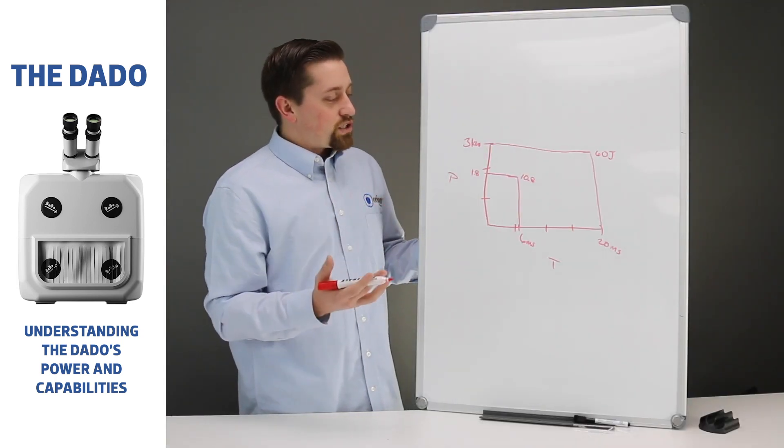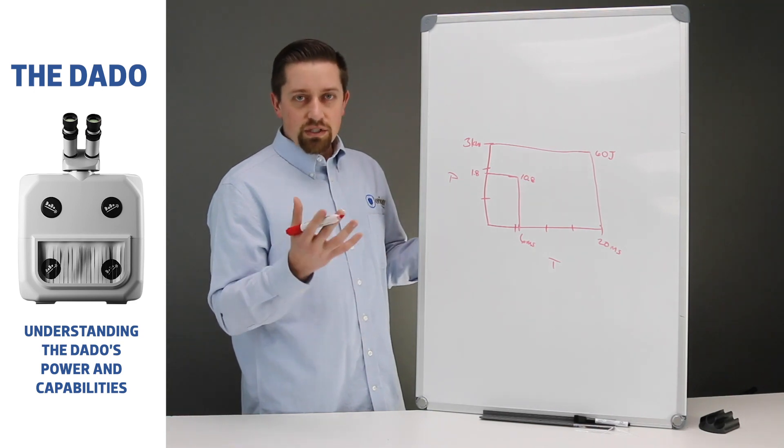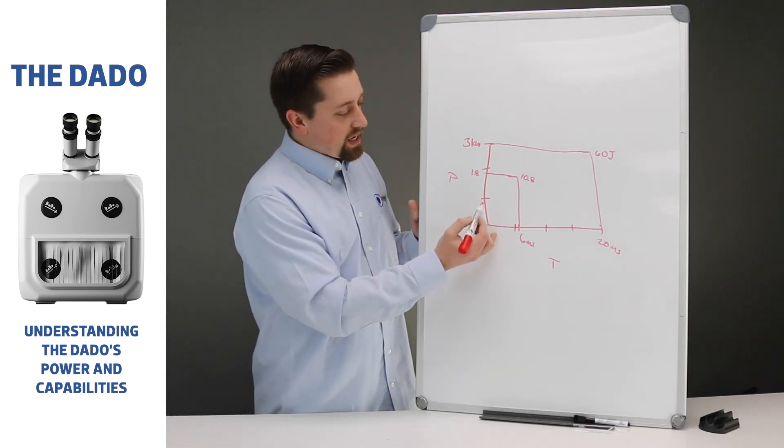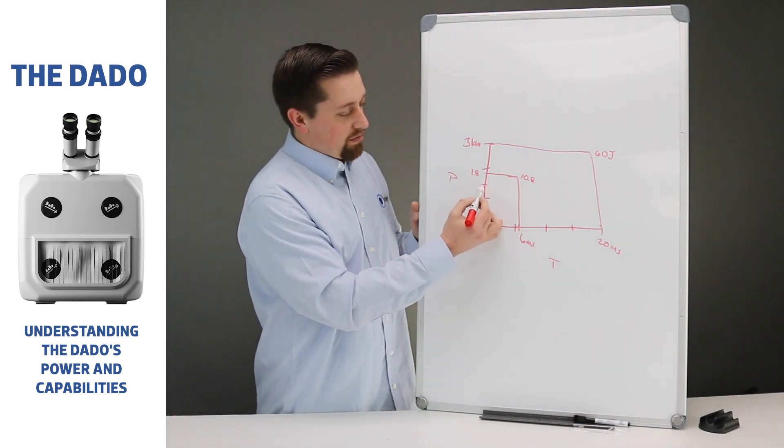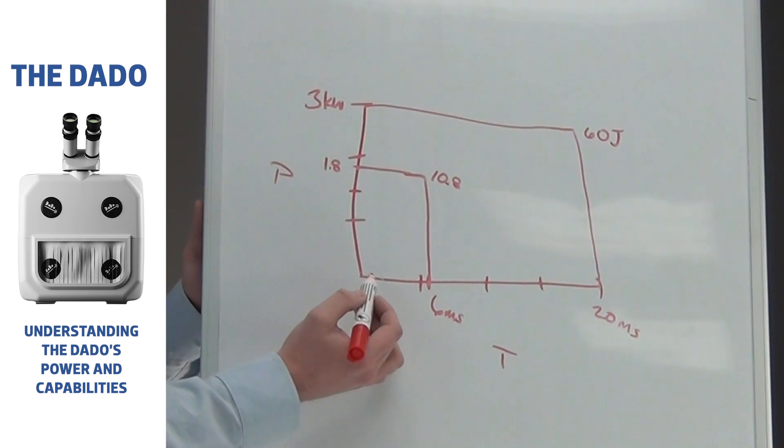Now when I sit down and do any job, I kind of have my go-to starting reference point. And it's anywhere between 1 to 1.5 kilowatts, and it's usually between 1 or 2 milliseconds. Let's just go 1.5 milliseconds. So we have 1.5 here, we have 1.5 here, and this is the weld.